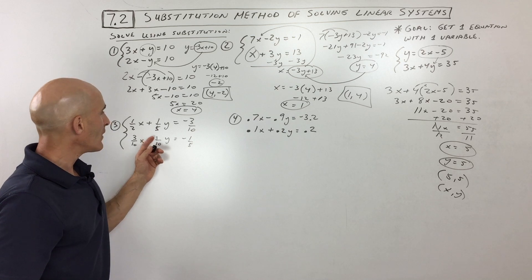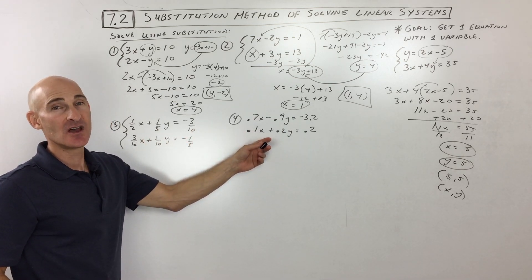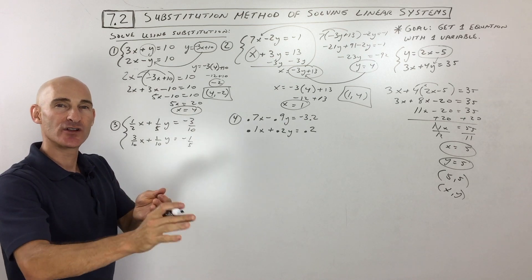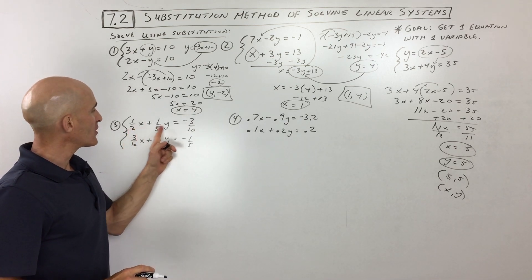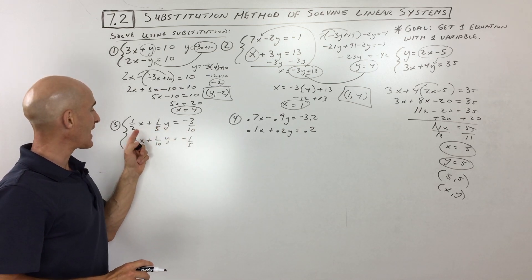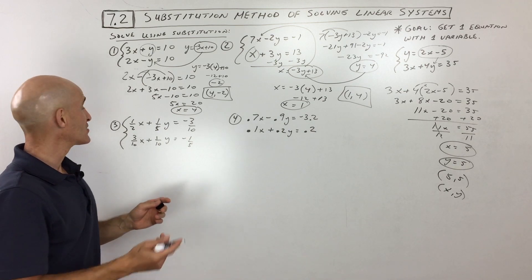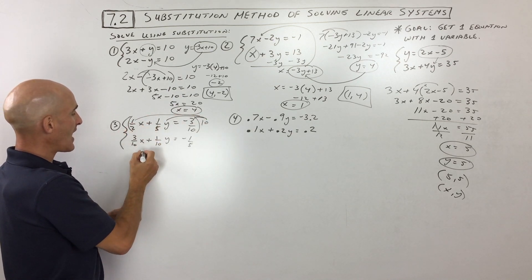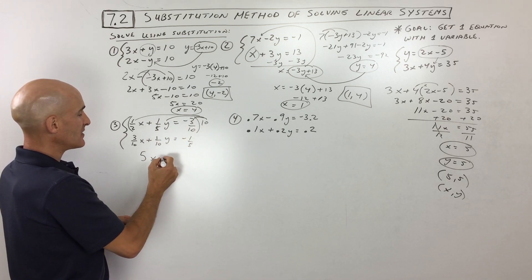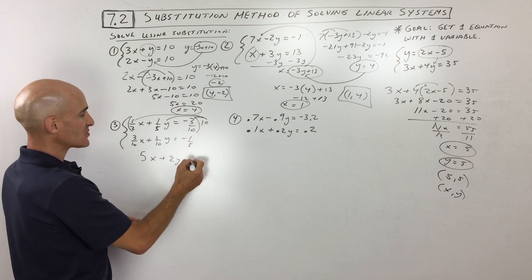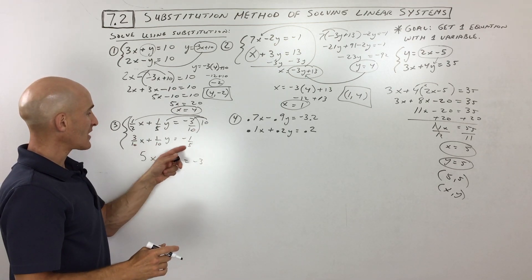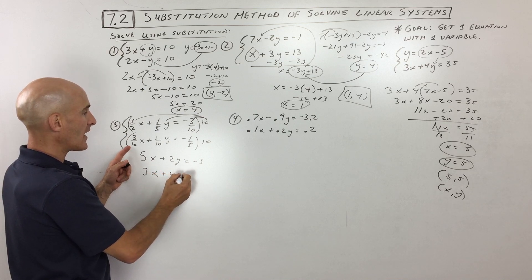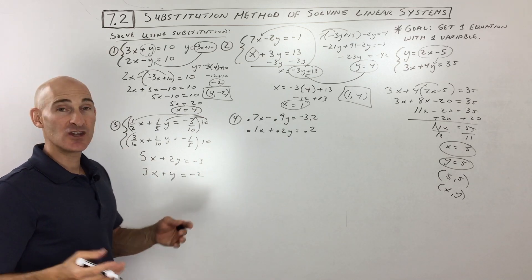Number 3 and 4 are very interesting because you have fractions and decimals. For the fractions, you can do what they call clearing the denominator — we talked about this earlier in the course. You want to get rid of those fractions by multiplying by the common denominator. What's the common denominator of 2, 5, and 10? It's 10. So we're going to multiply this entire equation times 10 — distribute, distribute, distribute. 10 times 1/2 is 5, 10 times 1/5 is 2, and 10 and 10 cancel, so you just get negative 3. We also have a common denominator of 10 in the other equation, giving us 3x plus y equals negative 2.